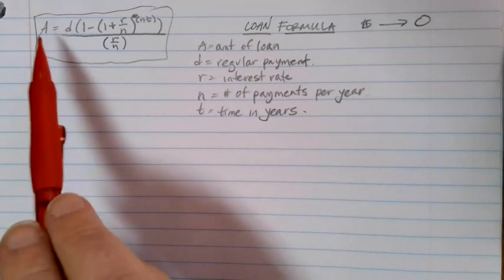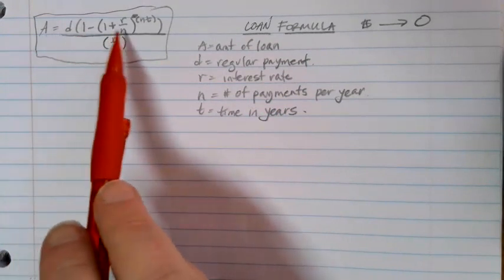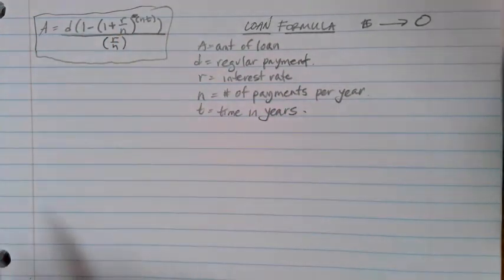Just like with the savings plan formula, it is really important to watch for the locations of all the parentheses as you're typing them in and work on that to get our value.